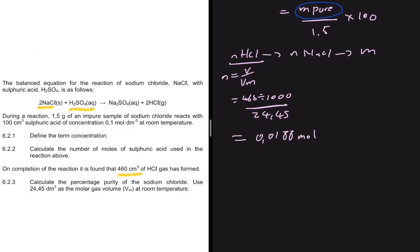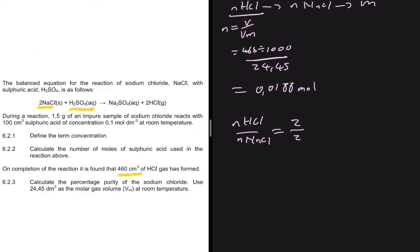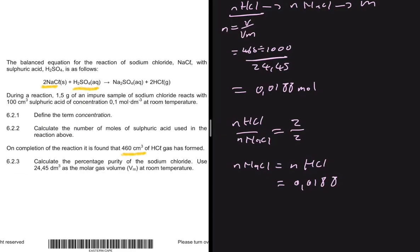Now let's find the moles of NaCl. The ratio of moles of HCl to moles of NaCl equals the ratio of their balancing coefficients. The balancing coefficient of HCl is 2 and the balancing coefficient of NaCl is also 2, so the moles of NaCl equal the moles of HCl, which is 0.0188 moles.